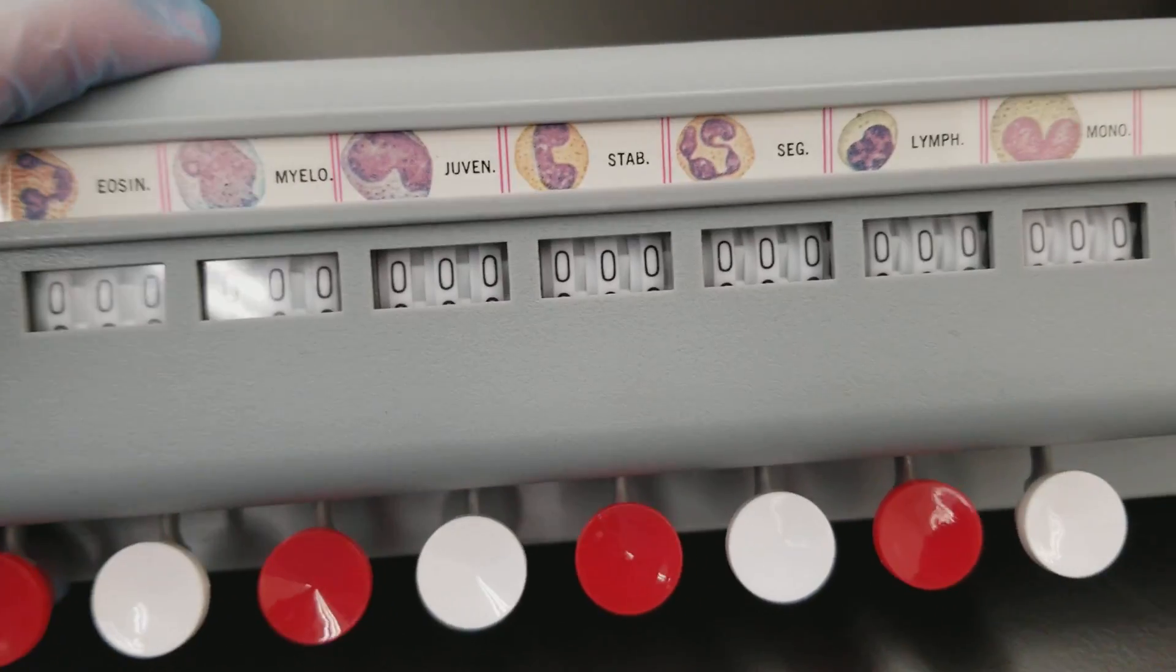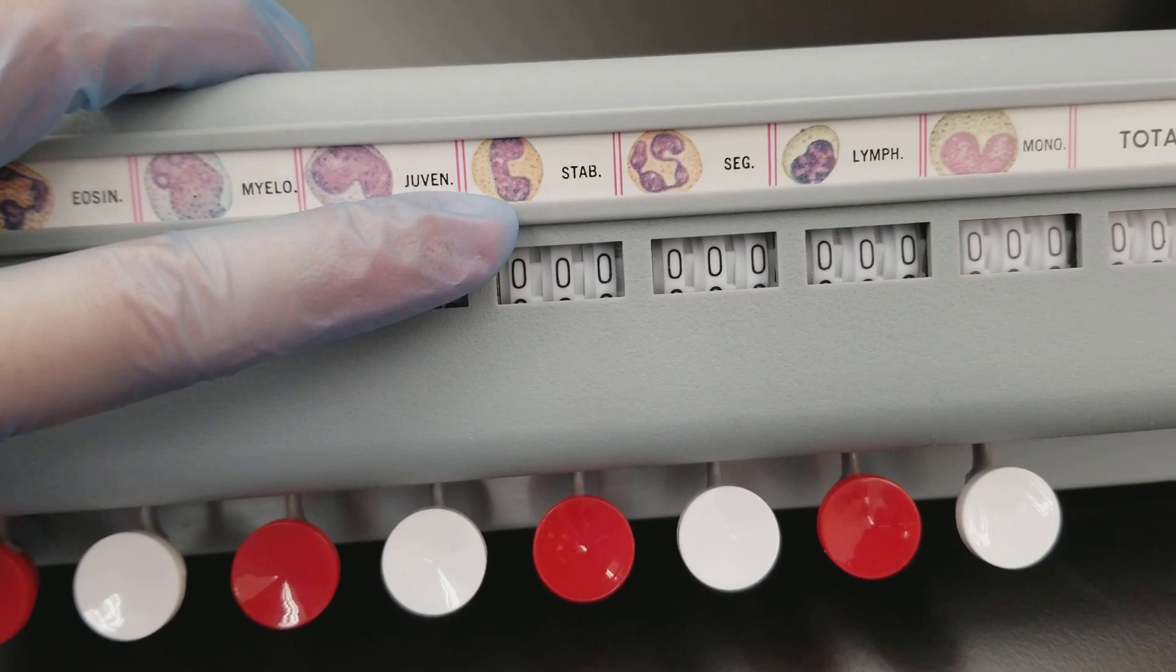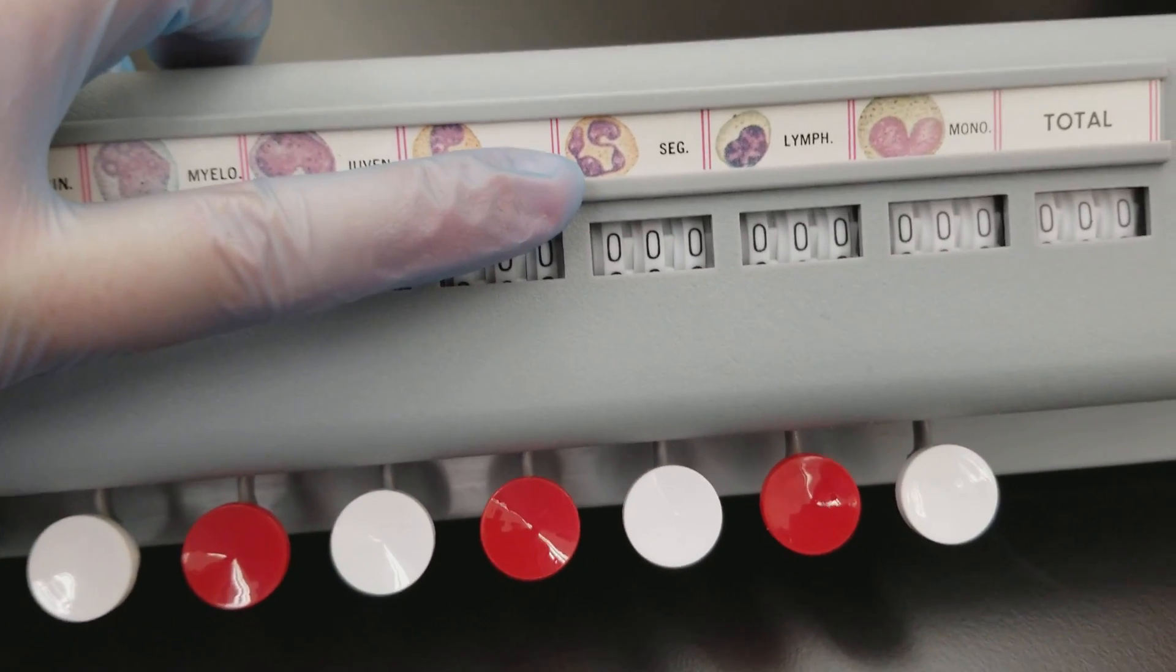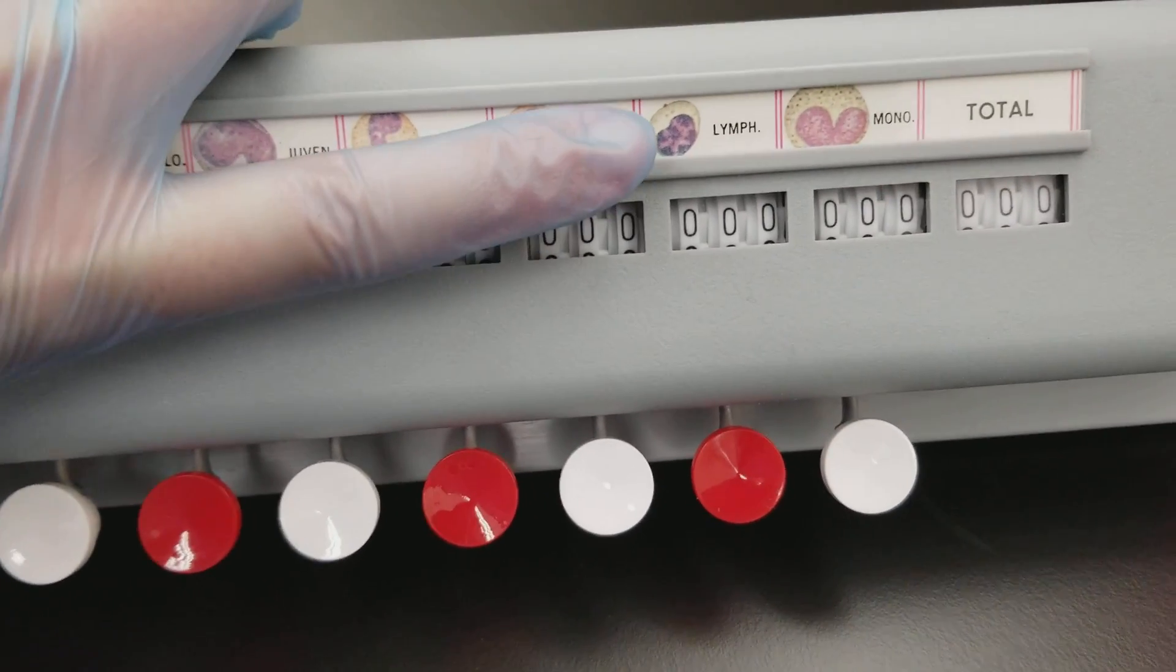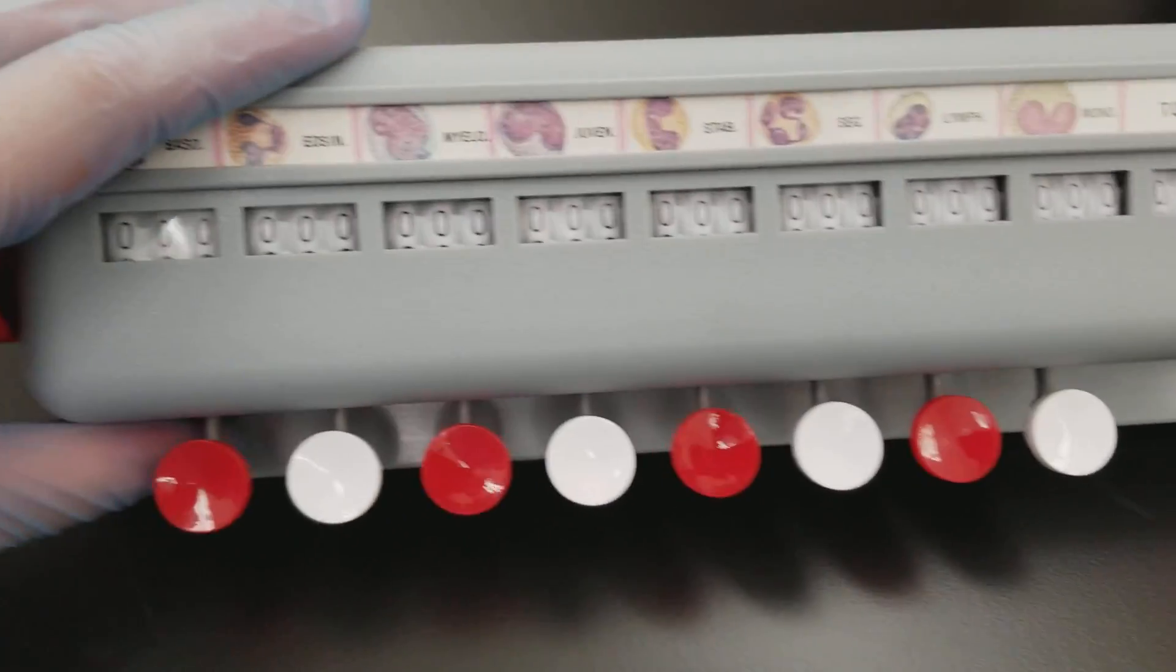Juvenile myelocytes. Then you have bands and segmented neutrophils. Then you have lymphocytes, monocytes, and then you have the total over there.